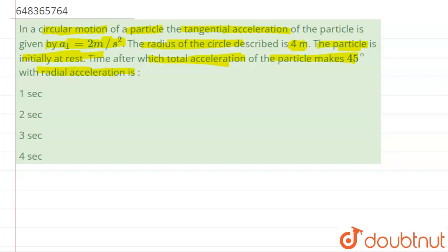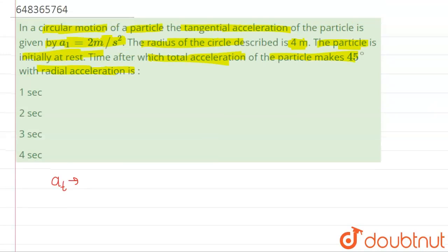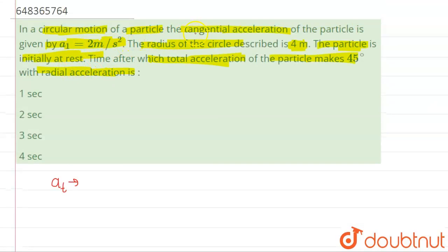So basically, a particle is undergoing circular motion. Also it has tangential acceleration. The tangential acceleration of the particle is given, so basically the tangential acceleration is constant and it is 2 meter per second square. When we talk about centripetal acceleration, it is given by v square upon r.